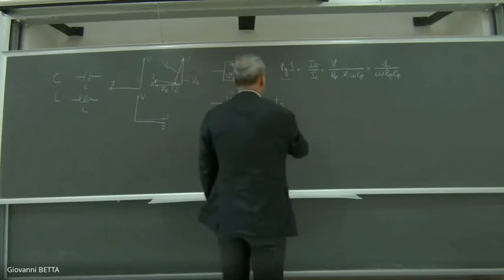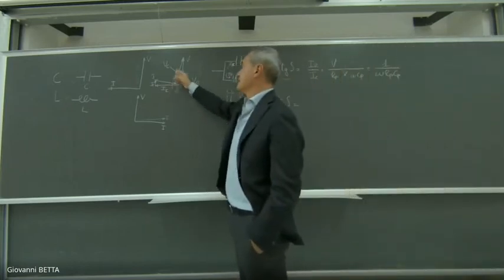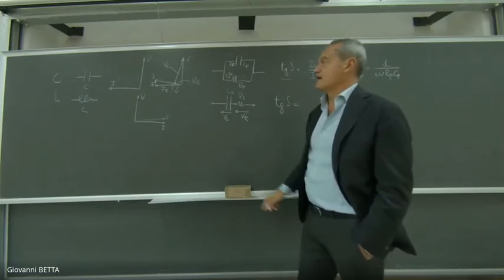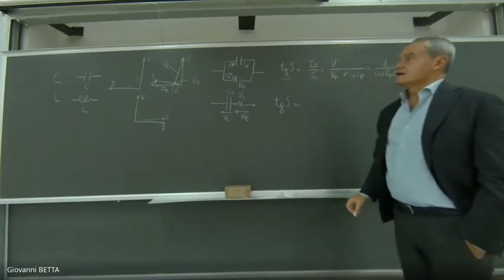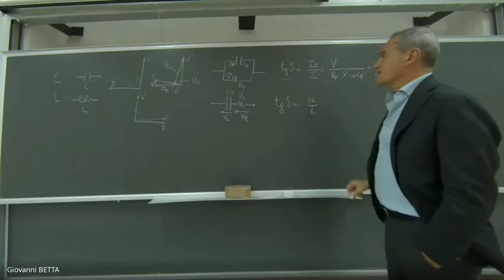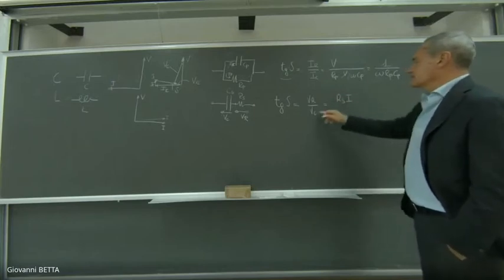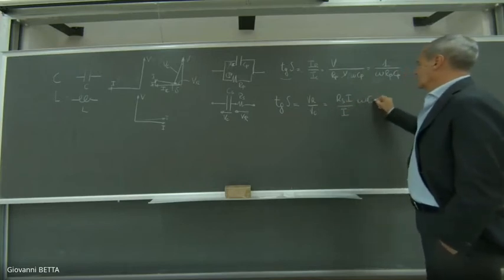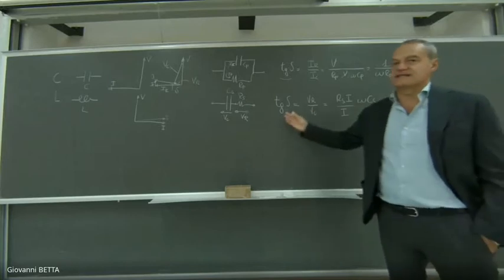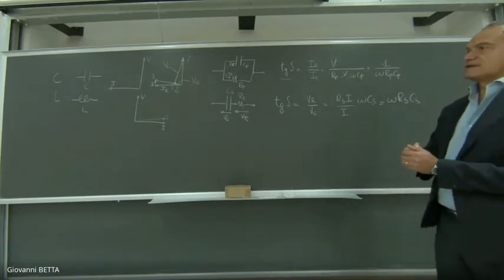Anche qui posso calcolare la tangente dell'angolo δ, ovvero il fattore di perdita. Poiché gli angoli sono complementari dello stesso angolo φ, posso scrivere tan(δ) come il rapporto fra V_R e V_C. V_R si può scrivere come R_S·I, e V_C come I/(ωC_S). Anche in questo caso siamo in grado di scrivere tan(δ) in funzione dei due elementi R_S e C_S con cui ho deciso di modellare il condensatore reale.